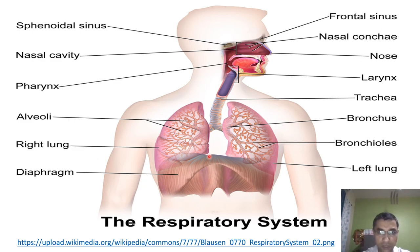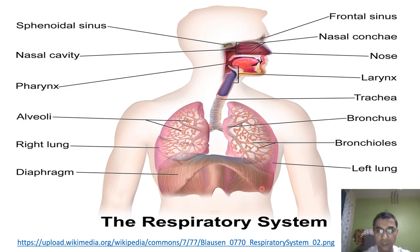Here you will see the diaphragm, whose role is to separate the thoracic cavity from the abdominal cavity. In the thoracic cavity there are two organs: the lungs and the heart. The rest of the organs are located in the abdominal cavity. The diaphragm also helps in the breathing and respiratory process.